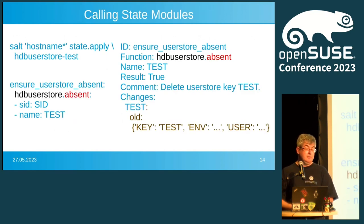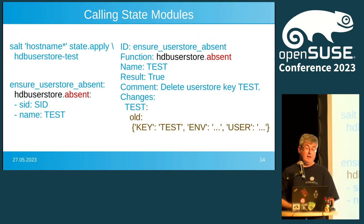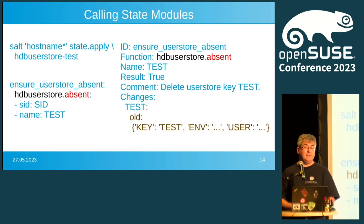Calling a state module with the hostname using state.apply runs a command stored in the HDB user store test file. On the bottom left you see the state hdbuserstore.absent on the SID, with the key 'test' to be deleted. The output on the right-hand side shows the changes: the old key was 'test.' I've omitted the environment and user, but there is no new key — so the user store has been deleted, which is what we called in the command.